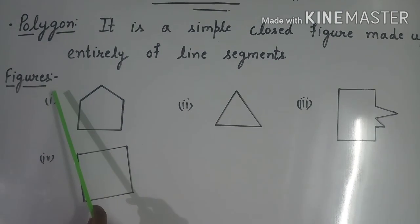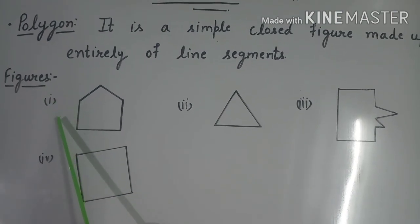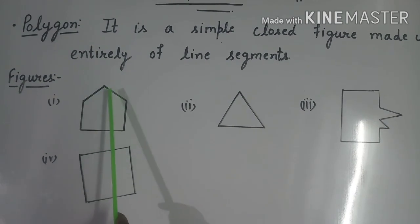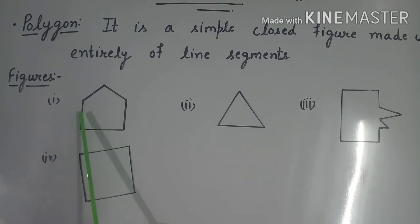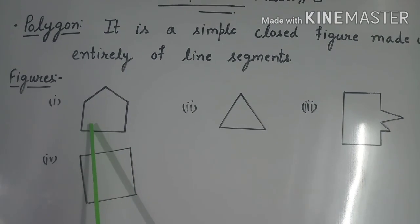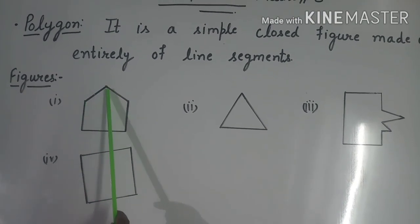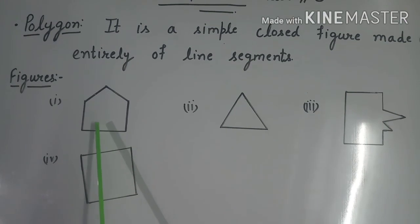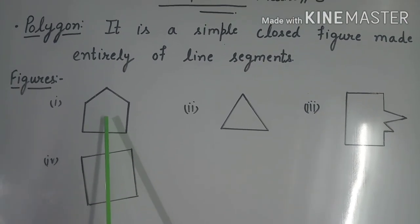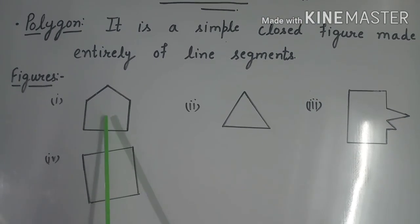We will understand polygon with the help of figures. The first figure has 5 line segments, and this figure is a closed figure, because the line segments join together and there is no open space. Therefore, this is a closed figure made of line segments — therefore, this is a polygon.